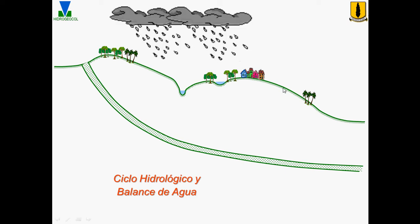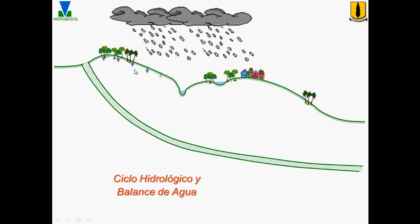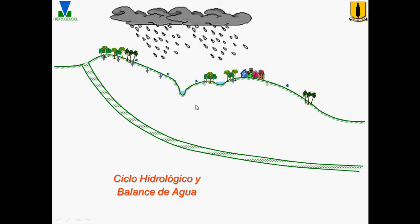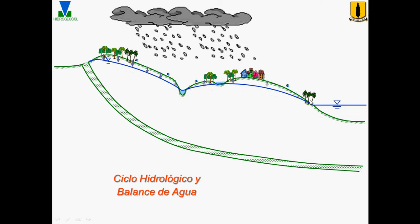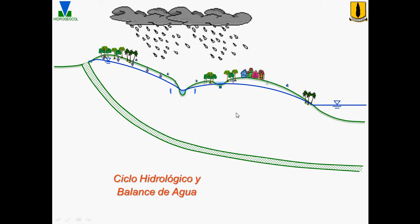Rain is the main input. It produces surface runoff, surface retention, retention by vegetation, stream flow, infiltration or recharge to groundwater, the water table, spring outflow, base flow to streams, and interaction with wetlands.